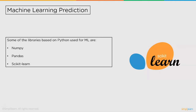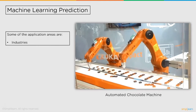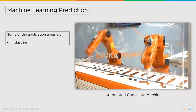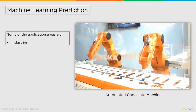Followed by that, we have TensorFlow, also a library for machine learning. It can be used across a range of tasks but has a particular focus on training and inference of deep neural networks. Some of the applications where Python automation is extensively employed are industries. Industries have been using machines for a long time, but with the introduction of smart machines, Python has come into use in industrial machines.